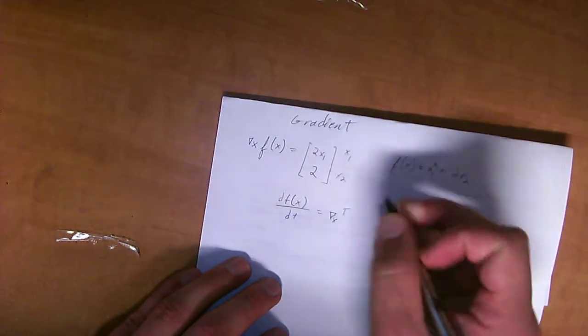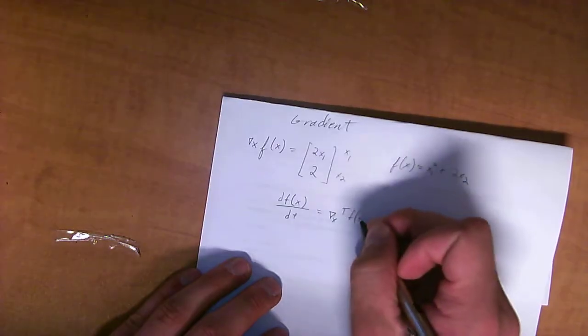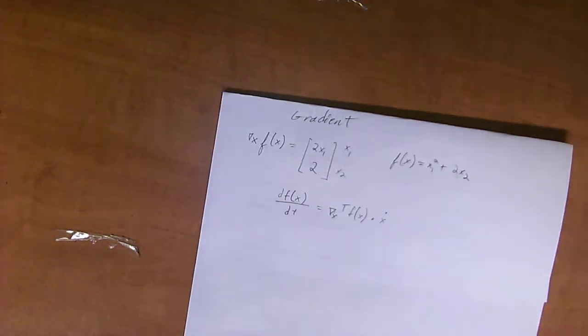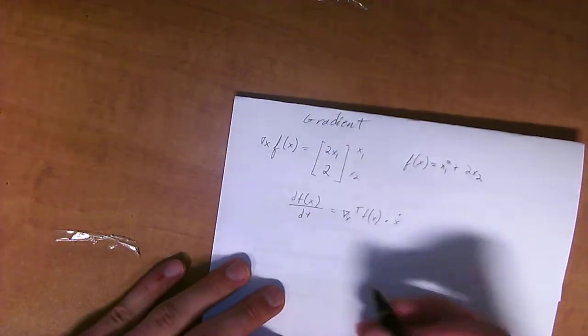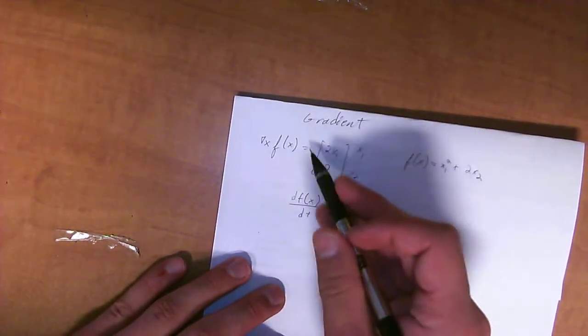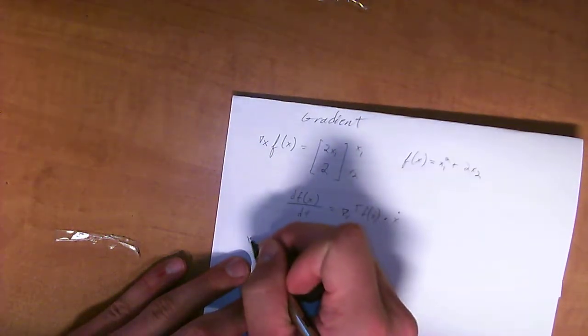So, using this value that we had up here, if we have x is equal to [x₁, x₂], which will just be this up here, which is then also equal to [1 + 3t, t³].